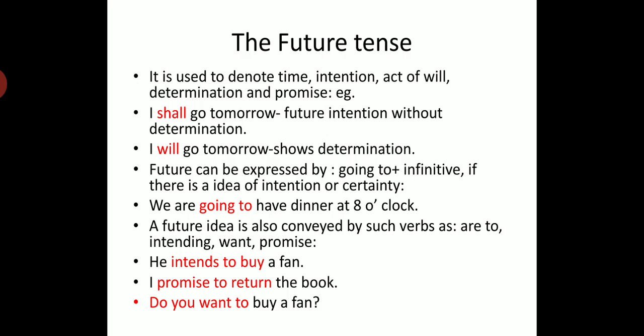Now we come to the future tense. Future tense uses 'shall' and 'will' and is used to denote time, intention, act of will, determination, and promise. For example, 'I shall go tomorrow' — 'shall' indicates future intention without determination. When we say 'I will go tomorrow,' that shows determination.